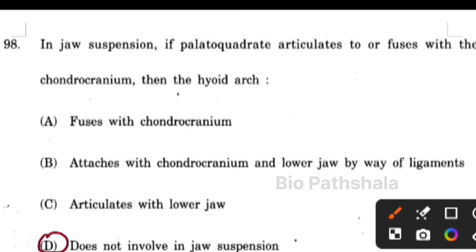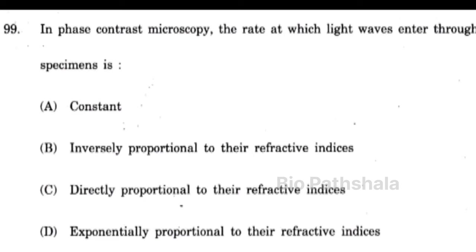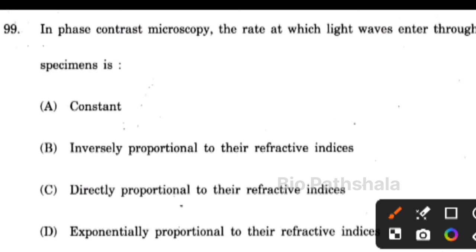Next question: in phase contrast microscopy, the rate at which light waves enter through the specimen is option number B — inversely proportional to their refractive indices.